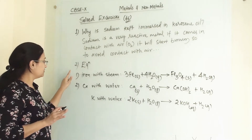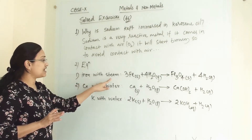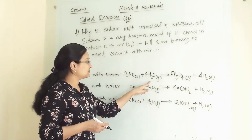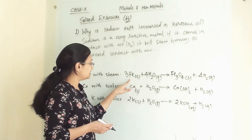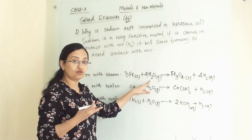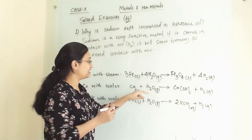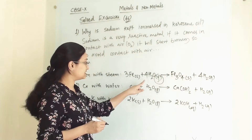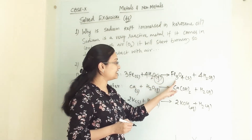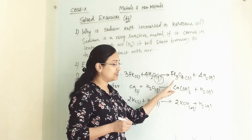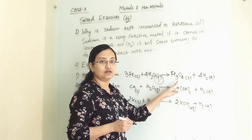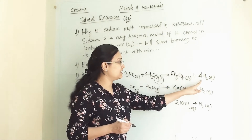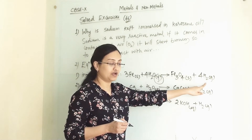In the second question, we have to write the equation when iron reacts with steam. So when iron reacts with steam: 3Fe reacts with 4 molecules of H₂O (gas) — meaning steam — to give Fe₃O₄, that is iron(II,III) oxide or ferric oxide, and 4 molecules of hydrogen gas.